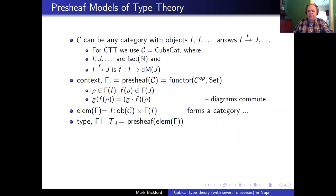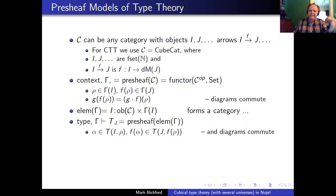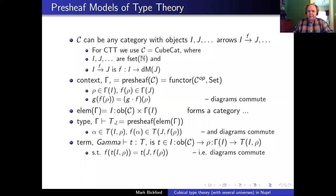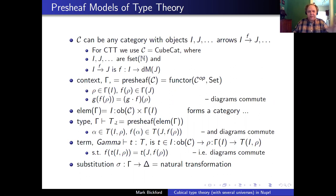The types are pre-sheaves over those elements — a family of types indexed by an object of the category and a member of the context there, and a family of functions such that the diagrams commute. The terms are then a family of things that go into those types such that the diagrams commute. The substitutions in this setup are the natural transformations between these contexts, which are functions. So that's the setup.